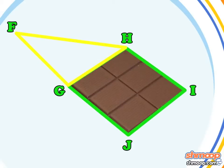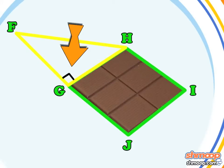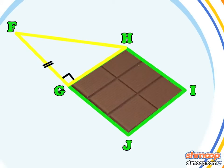We know angle FGH is 90 degrees, because the figure on the right is a square. If FG and GH are the same length, we know that angle FHG and HFG are both 45 degrees.